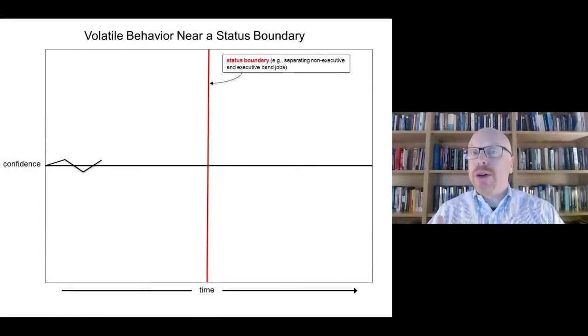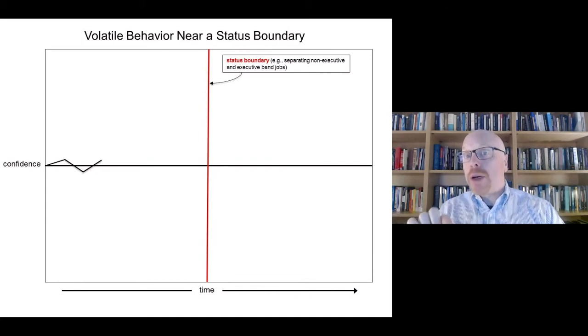Let's get a sense of what volatility in behavior close to a status boundary looks like. What we have in this diagram is time, calendar time, moving along the horizontal axis. And then vertically, and importantly, right in the middle of the space, we have this red line. This red line is a line of demarcation between different status grades. On the left side of the line is a lower status grade. On the right side of the line, a higher one.